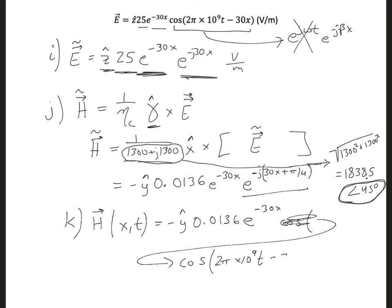Minus 30x, and then minus pi over 4. And this has, it's always good to put units, amps per meter. So let me put that here, amps per meter.